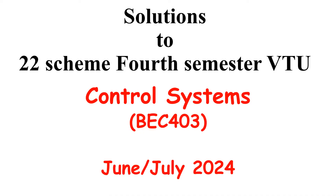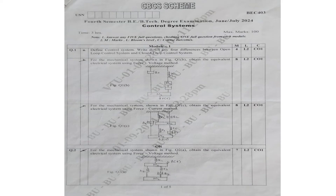The exam was conducted during June/July 2024, and this is the question paper. In module number one we have got various numericals on force voltage and force current analogy methods. In module number two we have got numericals on signal flow graphs using Mason's gain formula, block diagram reductions.